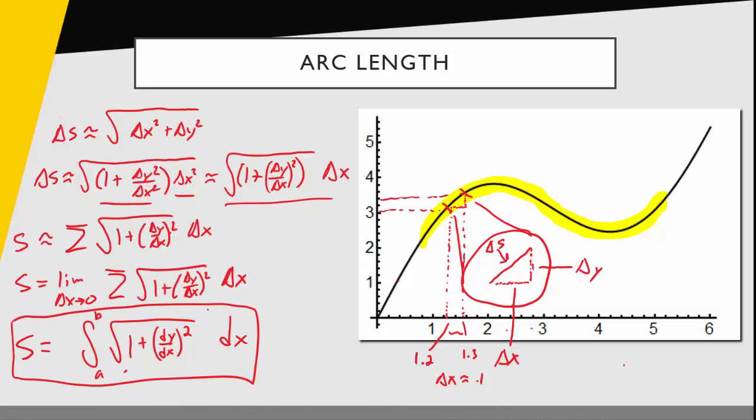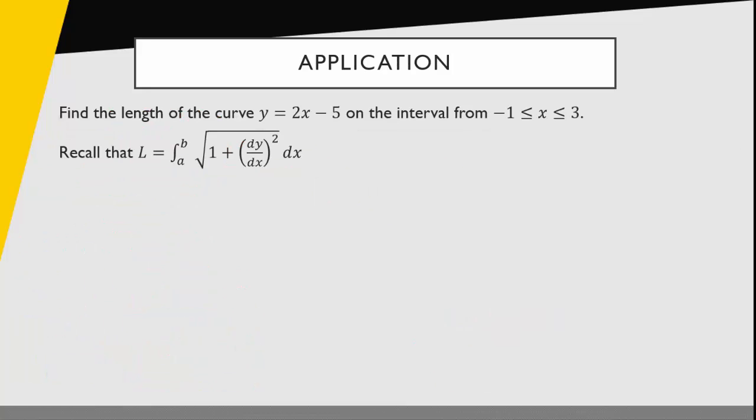The integral from a to b of the square root of 1 plus dy dx squared. Now let's see if we can apply that formula to actually find the length. Okay, this problem is find the length of the curve y equals 2x minus 5 on the interval from negative 1 to 3. So we have our formula, and now we just have to apply our formula. Since we have y is equal to 2x minus 5, I need to calculate dy dx. In that case, this is just 2.